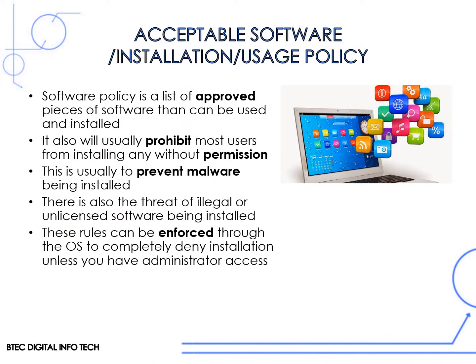An acceptable software installation and usage policy is a list of approved pieces of software that can be used and installed — in other words, you're giving people a list of which software they're allowed to use and which ones can be installed. Most organizations completely prohibit most users from installing any software without permission, usually to prevent malware being installed by mistake. There's also the threat of illegal or unlicensed software being installed if you don't stop people from installing applications.